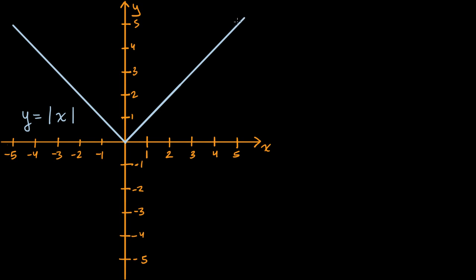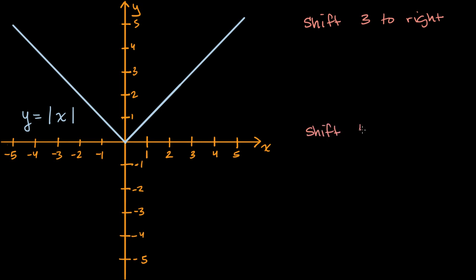What I want to do in this video is think about how the equation will change if we were to shift this graph. In particular, we're going to first think about what would be the equation of this graph if we shift three to the right. And then think about how that will change if not only do we shift three to the right, but we also shift four up.